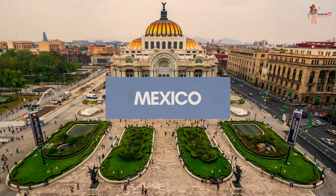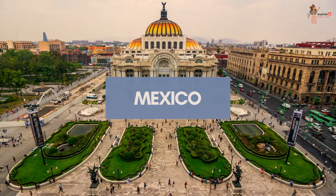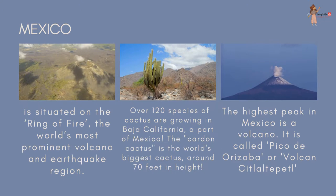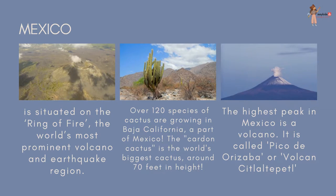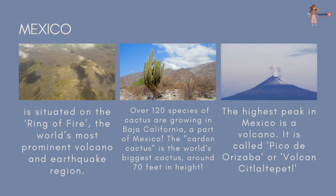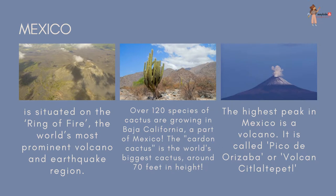They say that Mexico is a country no one ever leaves — even after visitors leave, a part of Mexico remains with them forever. Mexico is situated on the Ring of Fire, the world's most prominent volcano and earthquake region. Over 120 species of cactus are growing in Baja California. The cardon cactus is the world's biggest cactus, around 70 feet in height. The highest peak in Mexico is a volcano called Pico de Orizaba.